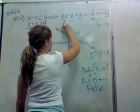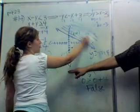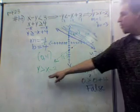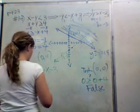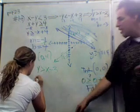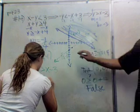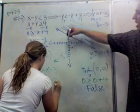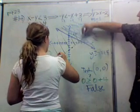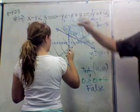We also test (0, 0) for y is greater than x minus 3. We get 0 greater than 0 minus 3, which is 0 greater than negative 3. That's true, so we shade upward on this side as well. Our solution is the overlapping shaded region where both inequalities are satisfied.